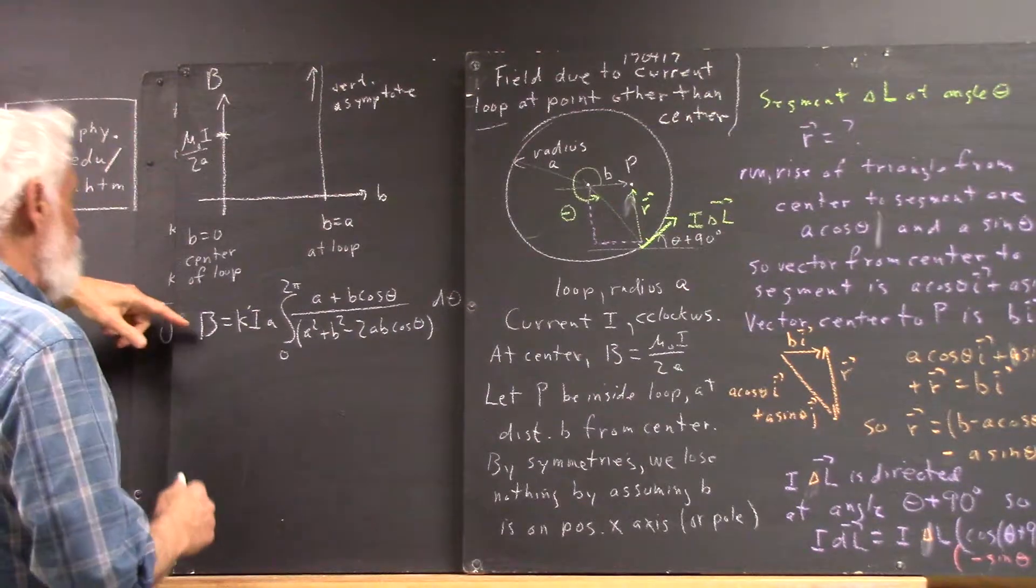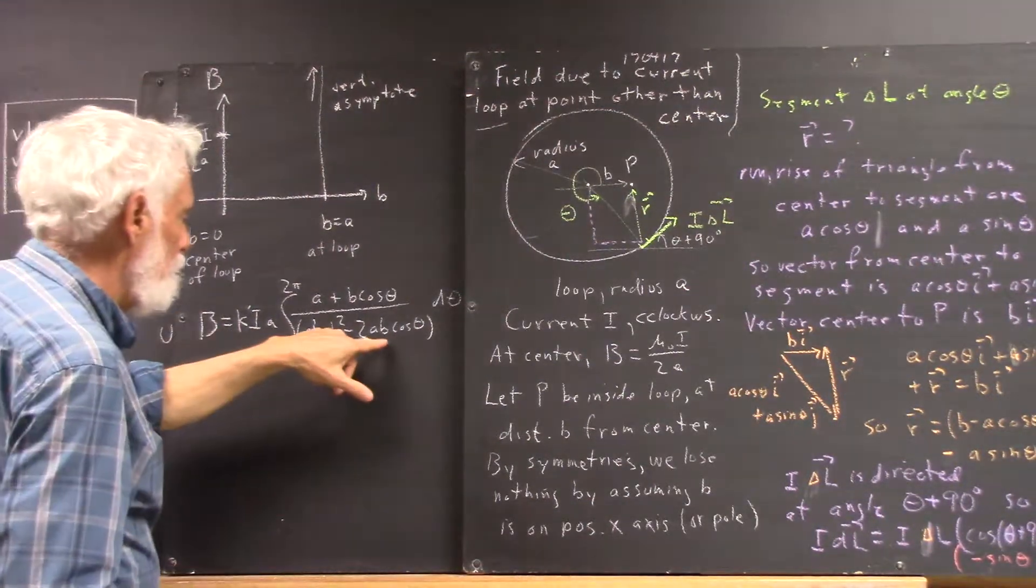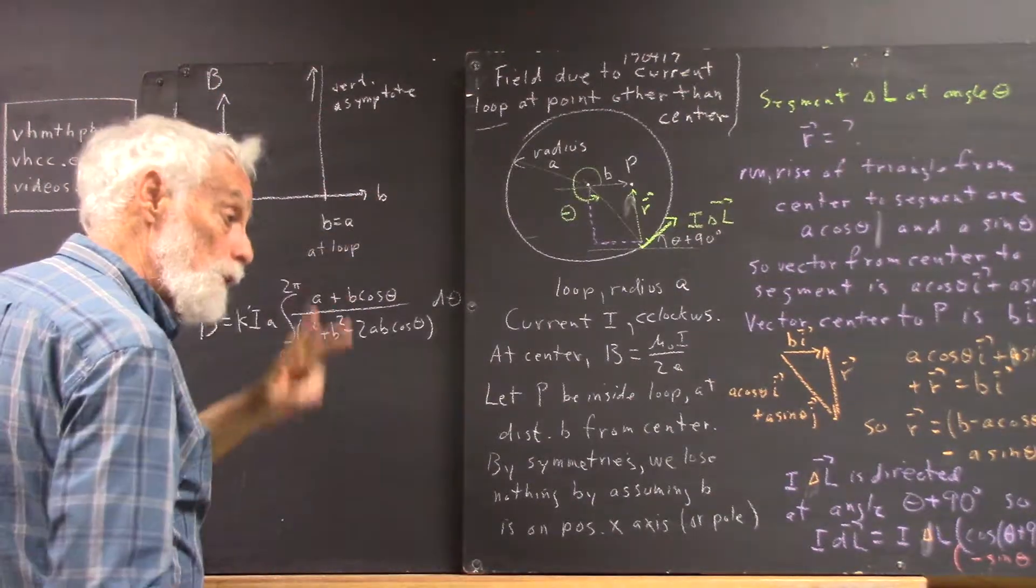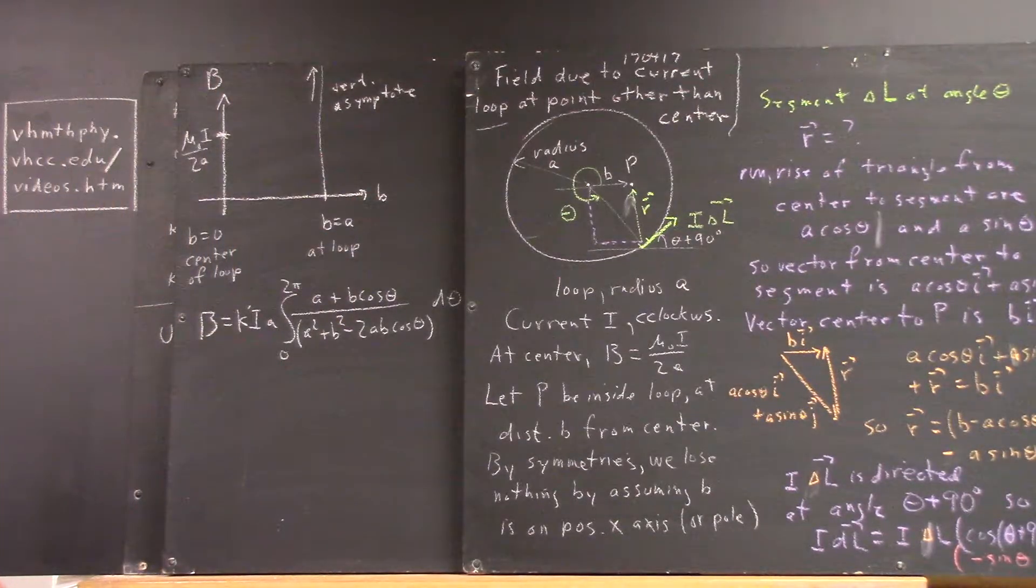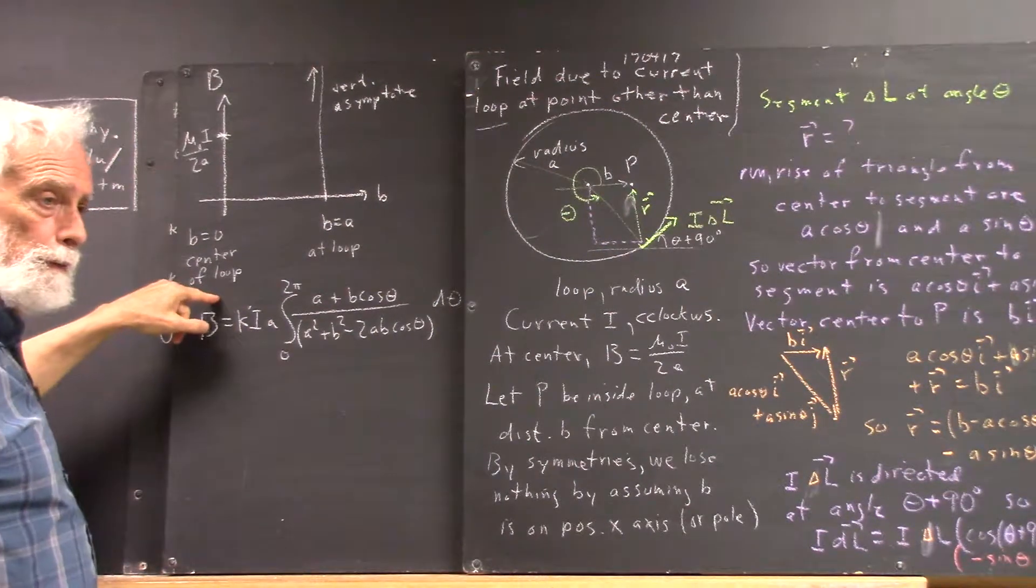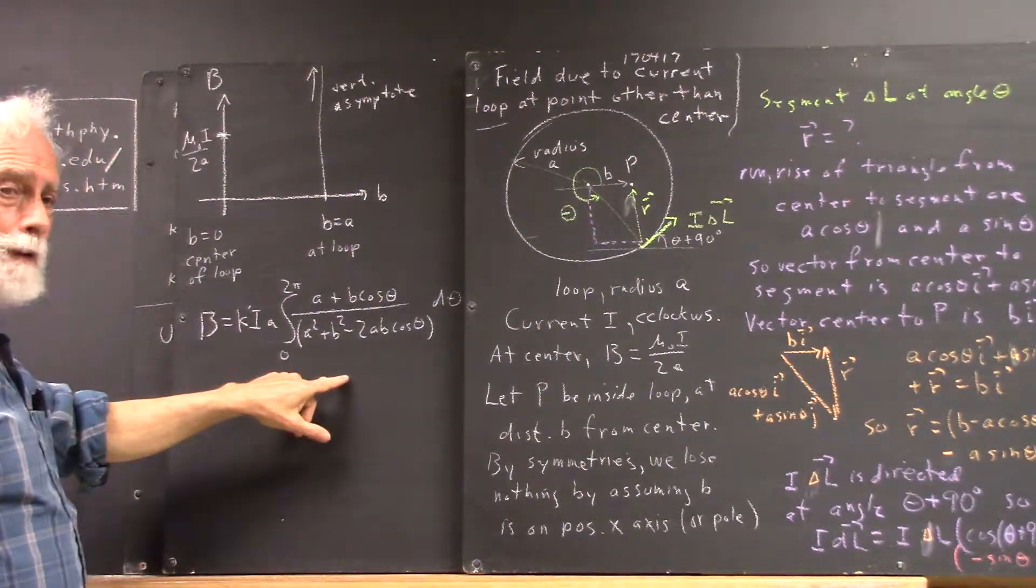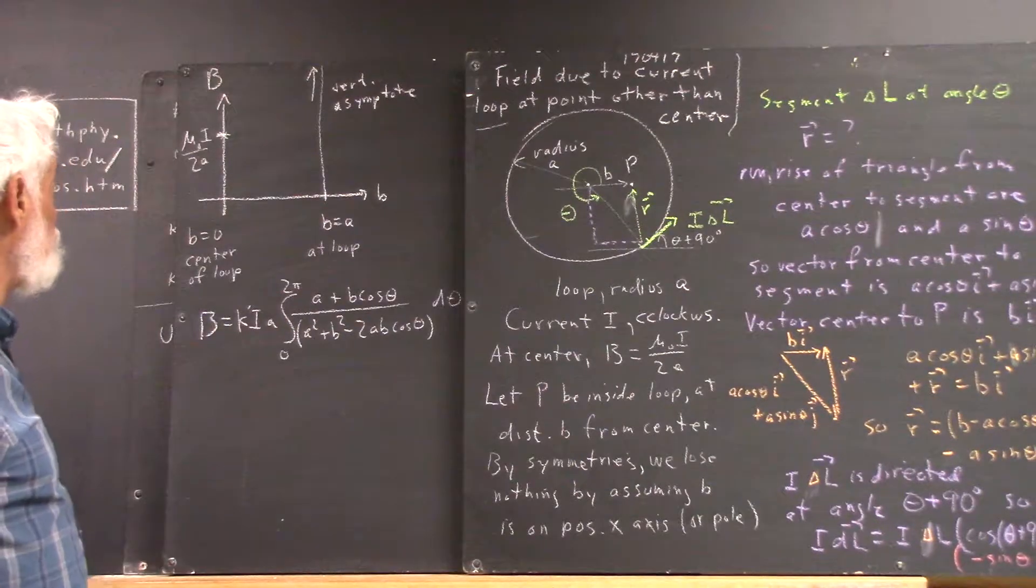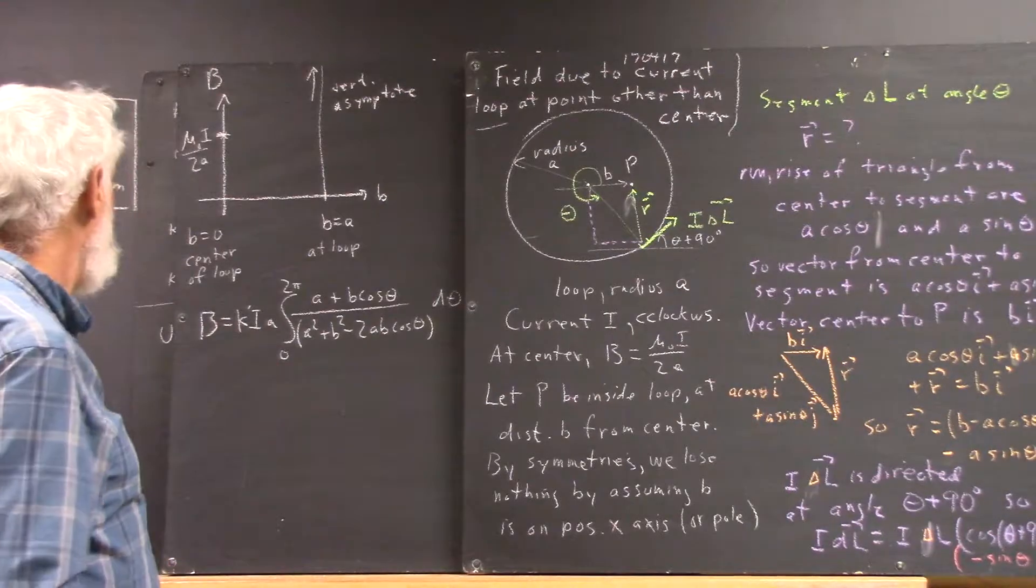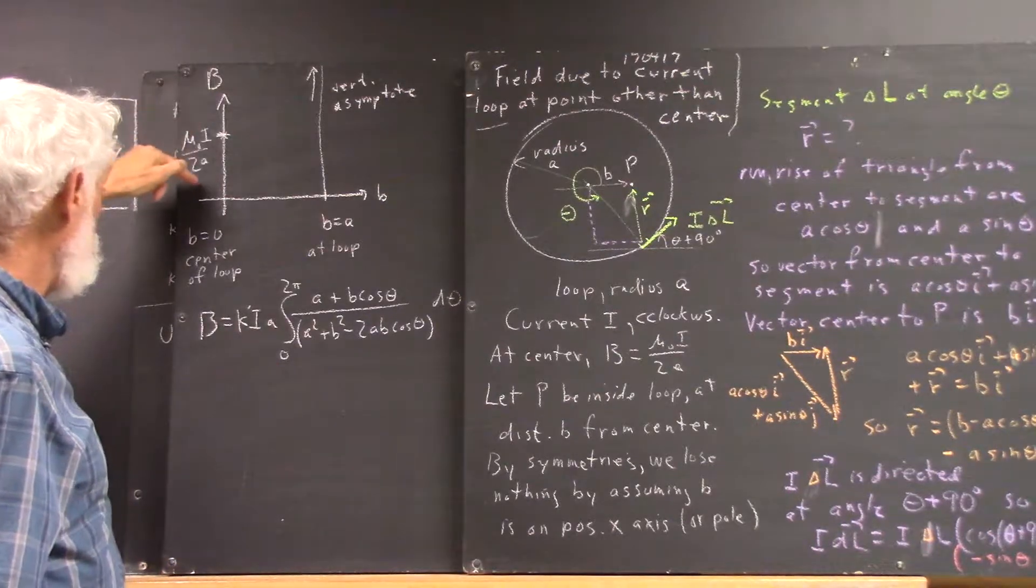So this gives us B as a function of little b, so we can graph big B versus little b. Two things we know. One thing is that at the center of the loop, this result had better darn well agree with the result we get for the center of the loop just doing the straightforward analysis we've done previously, mu naught I over 2A.